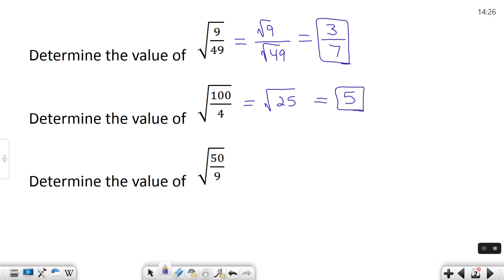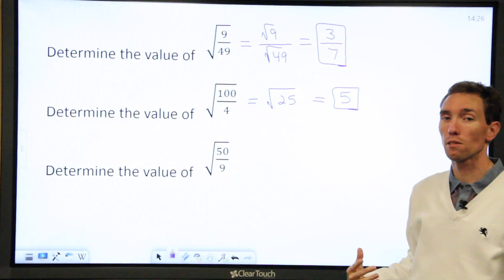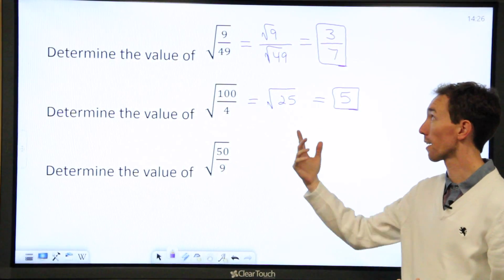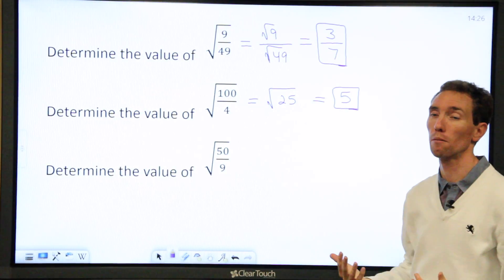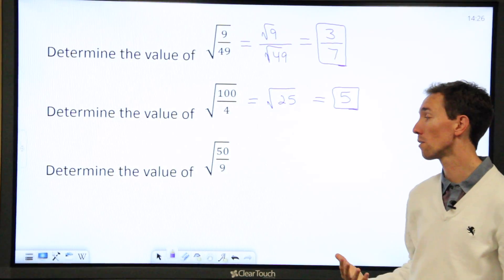Determine the value of the square root of 50 over 9. Well, this one, I know that 50 isn't what's called a perfect square. It's not like 9 or 49 or anything like that. So if I take the square root of it, I'm going to get some weird decimal. So I don't want to do that.